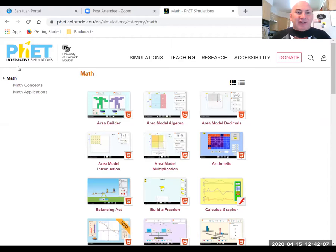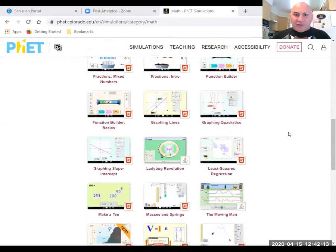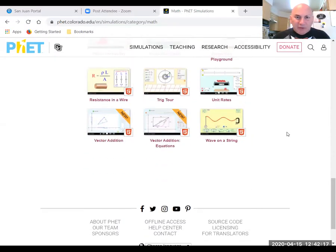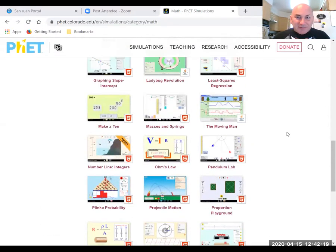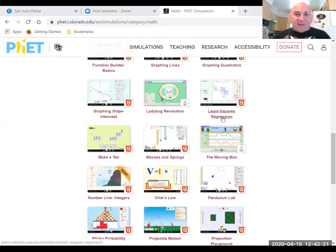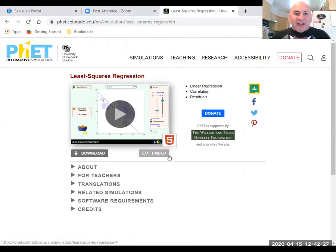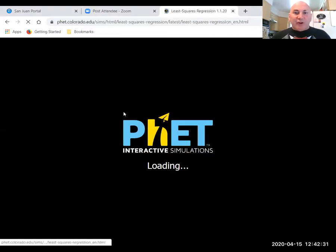So here's the PHET. I don't know what that stands for, but there you can see it is University of Colorado. We're just going to scroll down here. Least squares regression. Here it is. And I'm not going to download it or embed it. You can if you'd like. I'm just going to play it.